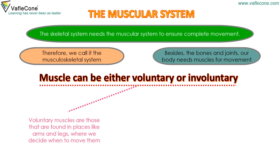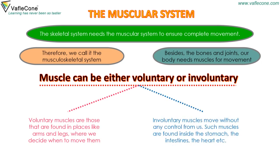Voluntary muscles are those found in places like the arms and legs, where we decide when to move them. Involuntary muscles move without any control from us. Such muscles are found inside the stomach, the intestines, the heart, etc.